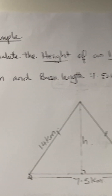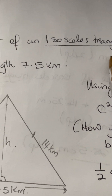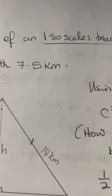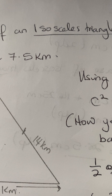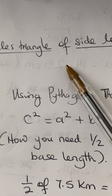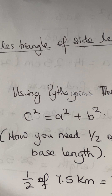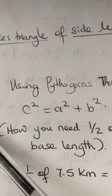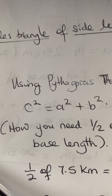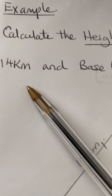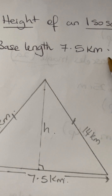Another example: calculate the height of an isosceles triangle. When you see a question in that form, you should be thinking: maybe Pythagoras' theorem. After you've gathered all the information from the question, draw a small diagram and ask yourself — should I use Pythagoras? What can I use to solve this? The side length is 14 kilometers and the base length is 7.5 kilometers.